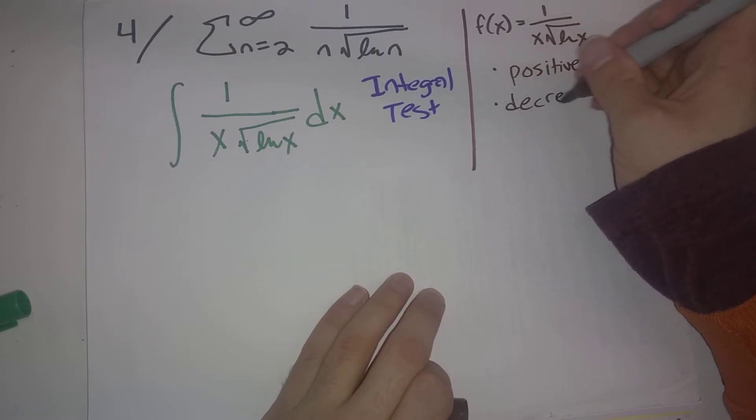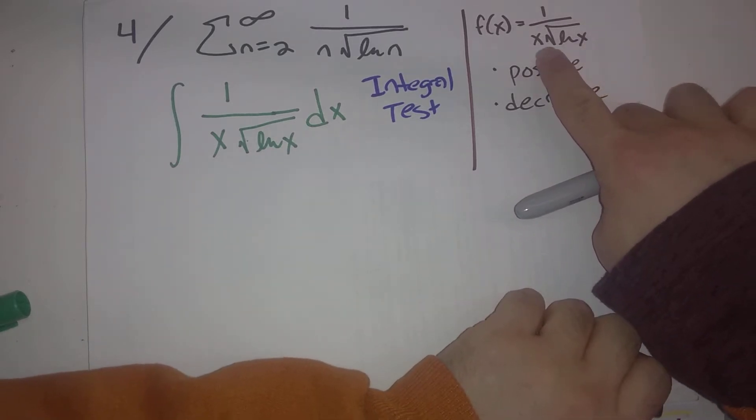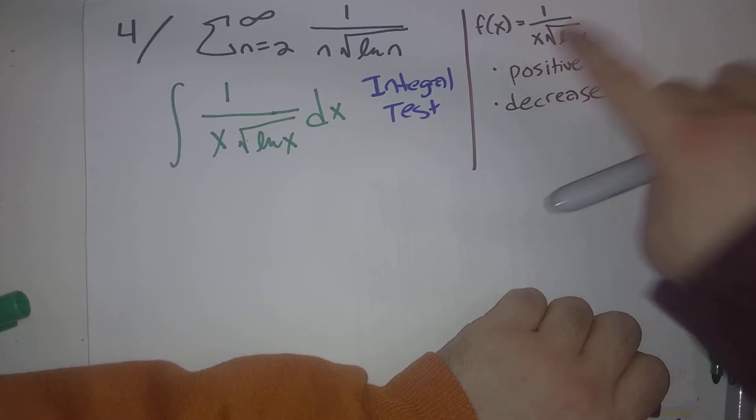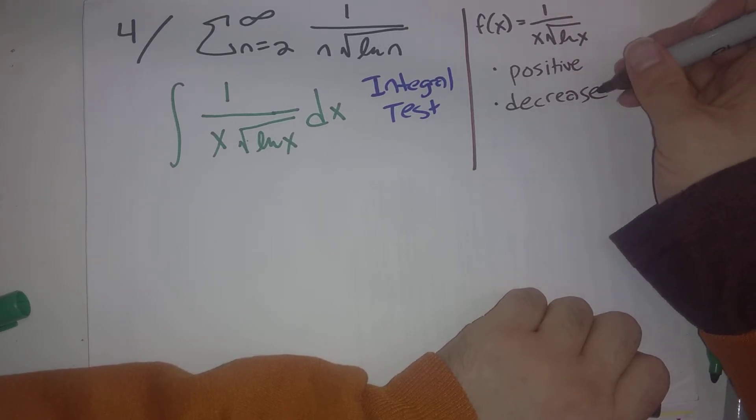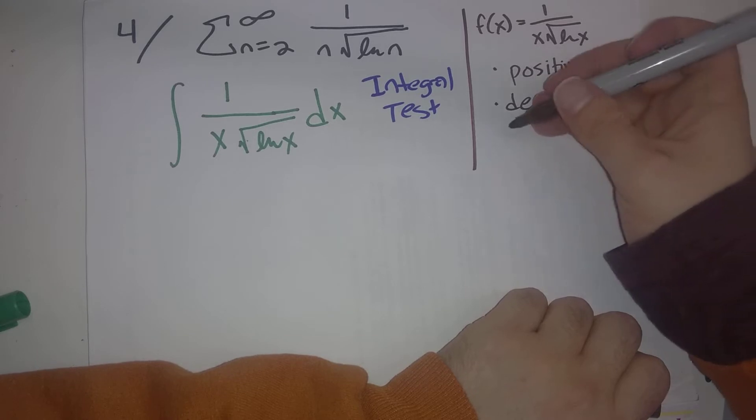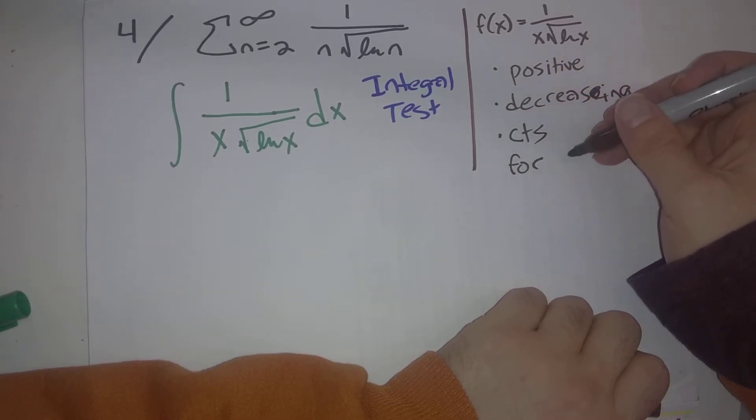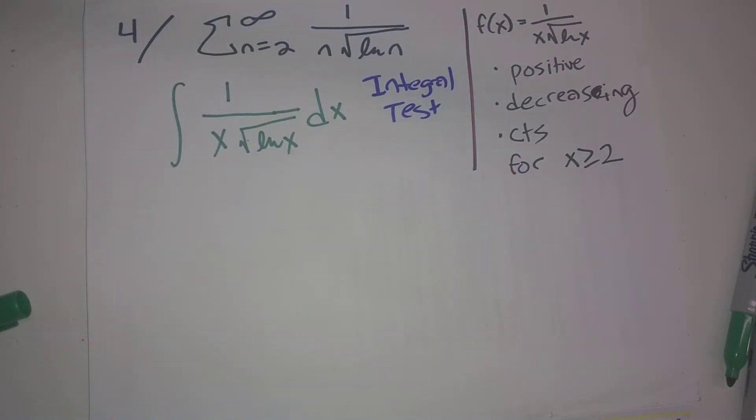This is decreasing. We could do that formally by calculating the derivative, or we can just look here and see that as x gets bigger and bigger, x is getting bigger and natural log of x is getting bigger, the denominator is getting bigger, so the whole thing is getting smaller. So it's positive, it's decreasing and it's continuous. I should say for x is greater than or equal to 2, our sum starts at n equals 2.